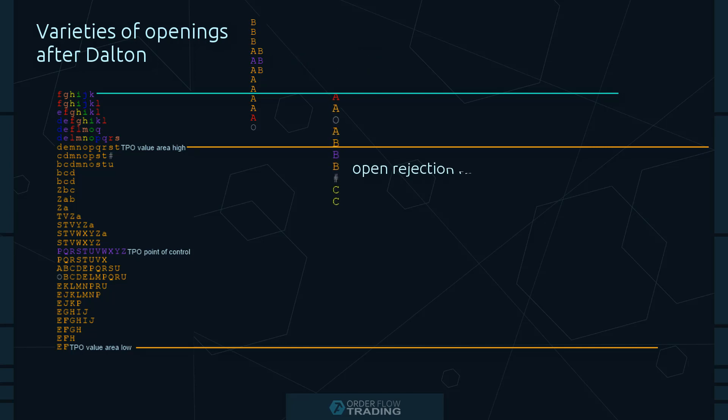Open Rejection Reverse: The price opens above or below the previous day's value area but falls back. These are non-trend days. However, it's less risky to trade since the range more often expands in one direction.